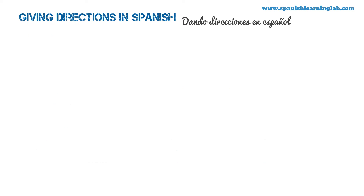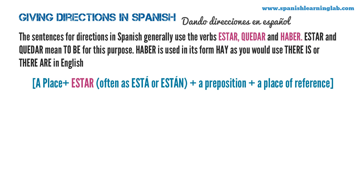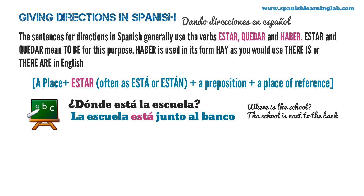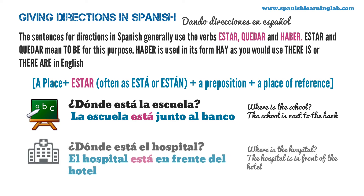Giving directions in Spanish. Dando direcciones en español. The sentences for directions generally use the verbs estar, quedar, and haber. Estar and quedar mean to be for this purpose. Haber is used in its form hay, as you would use there is or there are in English. We use estar this way: a place plus está or están, plus a preposition plus a place of reference. For example: ¿Dónde está la escuela? La escuela está junto al banco. ¿Dónde está el hospital? El hospital está en frente del hotel. In the first example, the place is la escuela, the verb is está, the preposition is junto al, and the place of reference is banco.